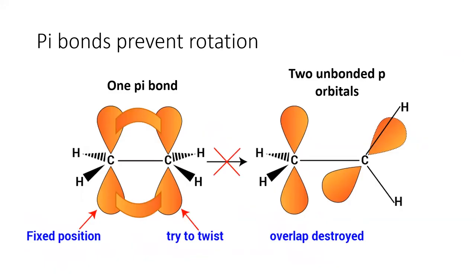Unlike sigma bonds, pi bonds prevent rotation. Because the pi bond extends above and below the atom, it cannot be rotated without breaking. In ethylene, the double bond locks these atoms into a flat shape that does not rotate.